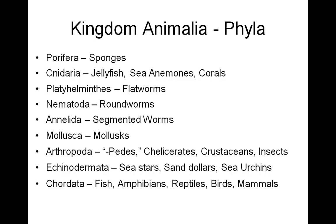So now we've taken a look at all of our nine major animal phyla in Kingdom Animalia: Porifera — the sponges; Cnidaria — jellyfish, sea anemones, sea corals; Platyhelminthes — my flatworms; Nematoda — my roundworms; Annelida — segmented worms; Mollusca — my mollusks; Arthropoda — my millipedes and centipedes, including chelicerates, crustaceans, and insects; Echinodermata — sea stars, sand dollars, and sea urchins; and then lastly, phylum Chordata — fish, amphibians, reptiles, birds, and mammals.